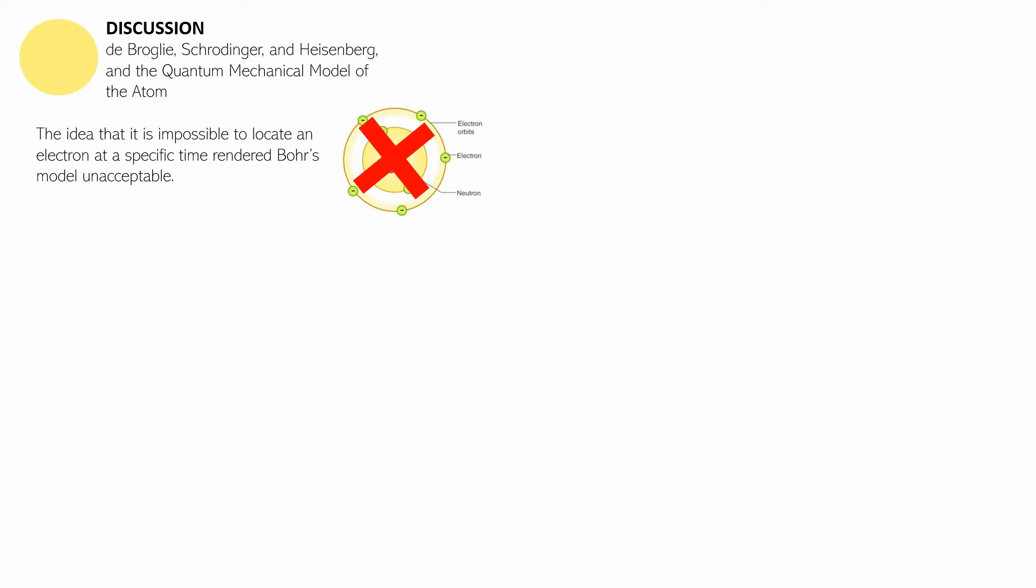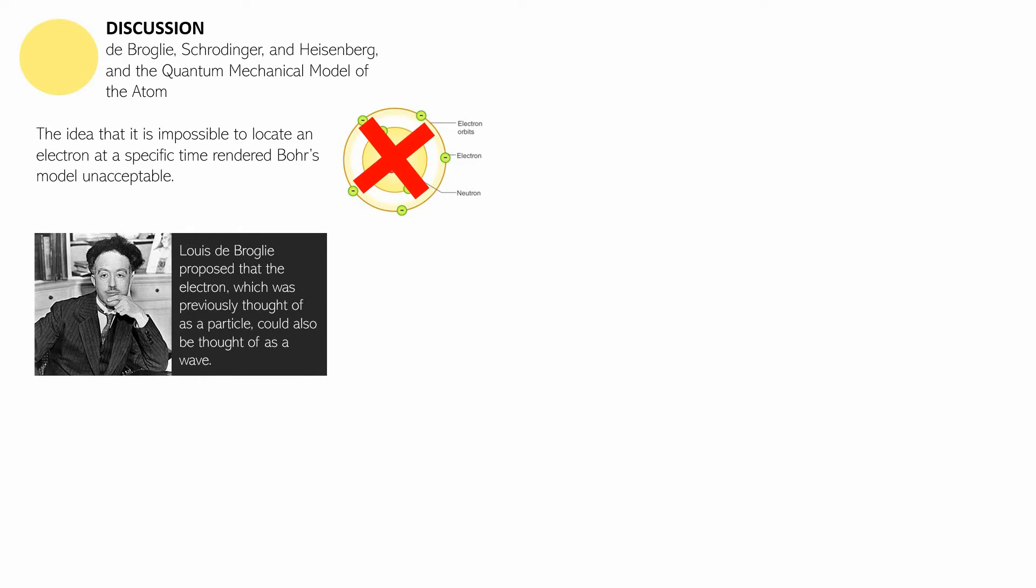With that, the following scientists worked on improvements. To begin with, Louis de Broglie worked on an improved atomic model. Louis de Broglie proposed that the electron, which was previously thought of as a particle, could also be thought of as a wave. So instead of just thinking of an electron as a form of matter, we can also think of it as a form of energy, in this case a wave which has a direction.